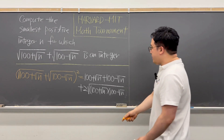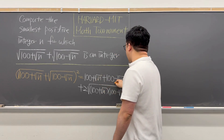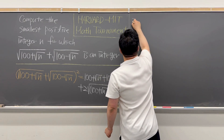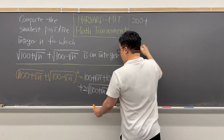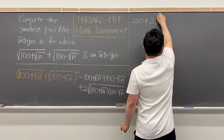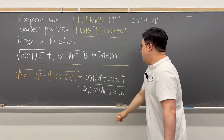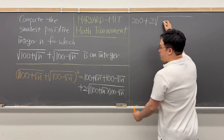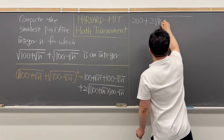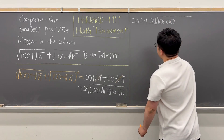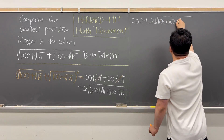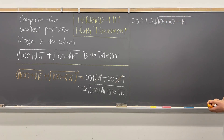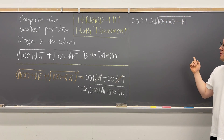We can cancel the square root of n terms out. Then 100 plus 100 equals 200. So we now have 200 plus 2 times the square root of (100+√n)(100−√n). That product gives us 10,000 minus n inside the square root. So our squared expression simplifies to 200 plus 2 times √(10,000 − n).